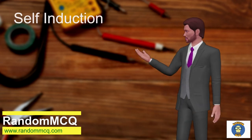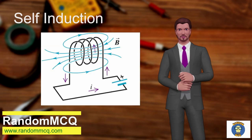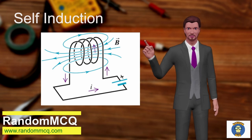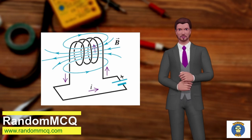Self-induction: When time-varying current flows in a coil, the time-varying flux is produced, and this varying flux will link with that coil itself, and as a result there will be emf induced in the coil.